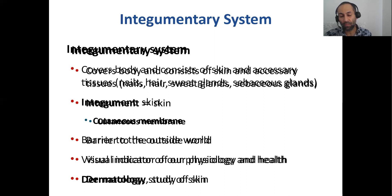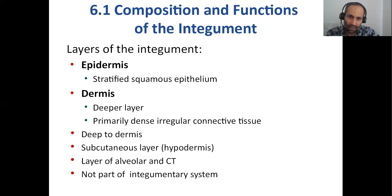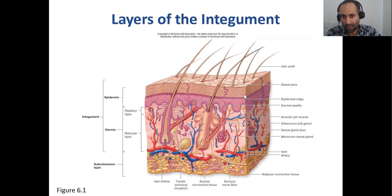The integumentary system has two layers of skin: the outermost called the epidermis — stratified squamous epithelium — and then the dermis, the underlying skin. Looking at the diagram, in the dermis you have connective tissue — areolar connective tissue, adipose connective tissue, blood vessels, and sensory nerves.